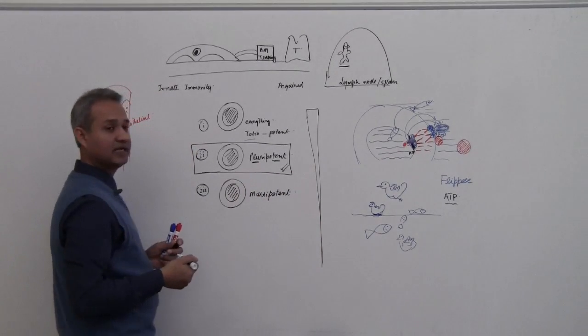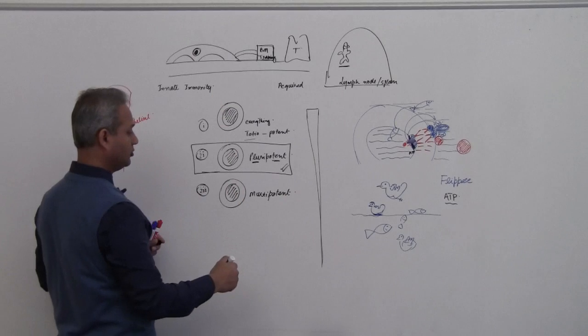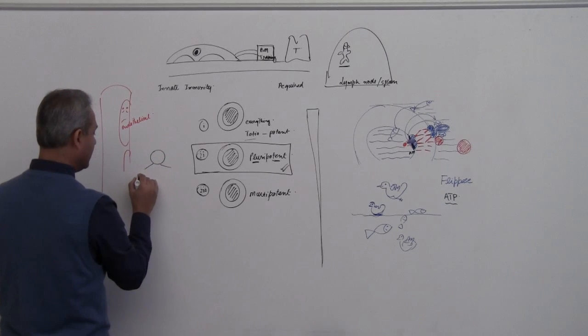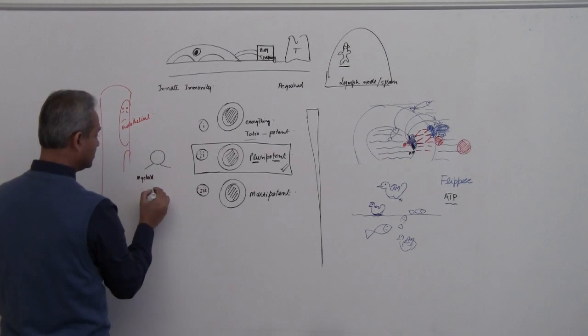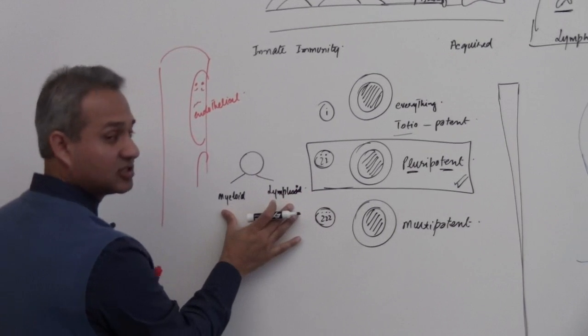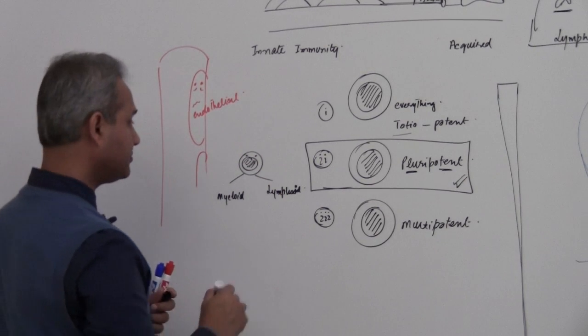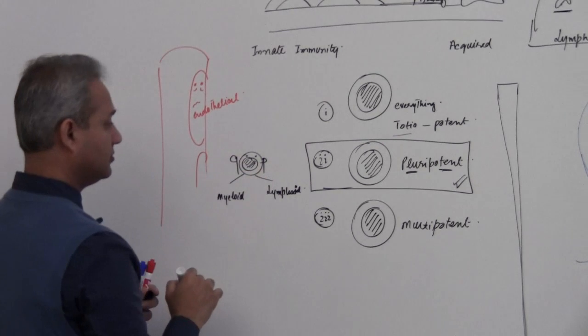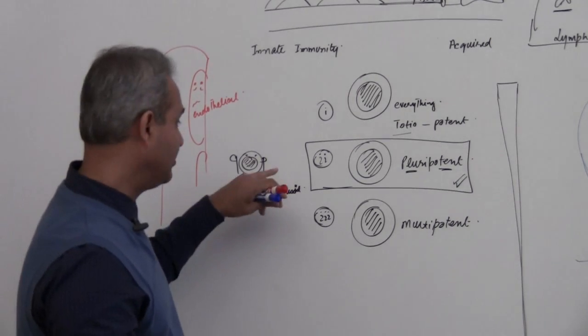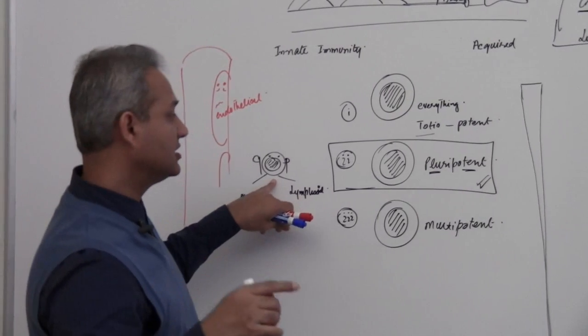Multipotent means it makes fewer types of cells than pluripotent. In the bone marrow, the pluripotent cell makes myeloid cells and lymphoid cells. This pluripotent guy makes myeloid and lymphoid, so all in all, he makes all the blood cells. He doesn't make all the body cells, just all the blood cells.